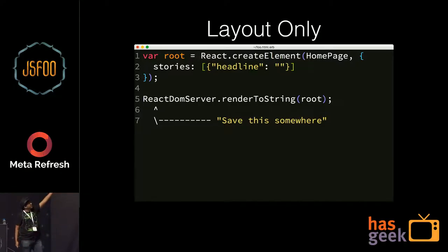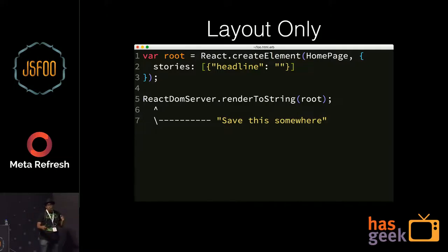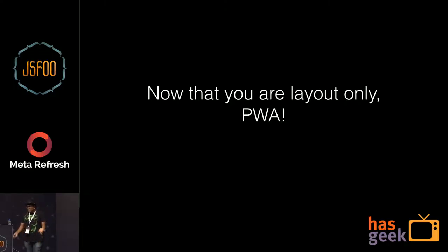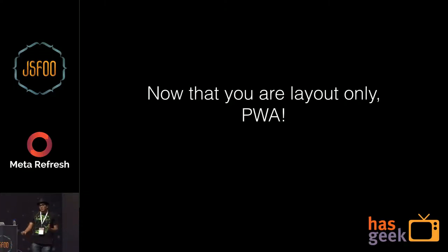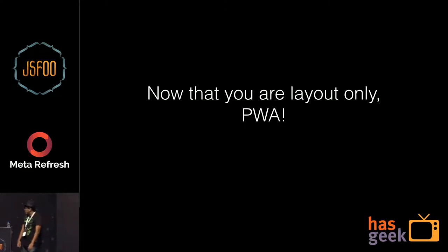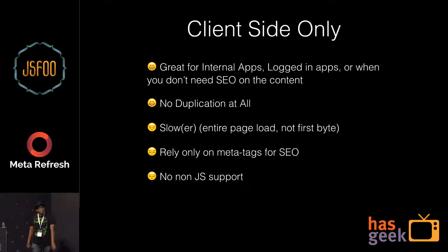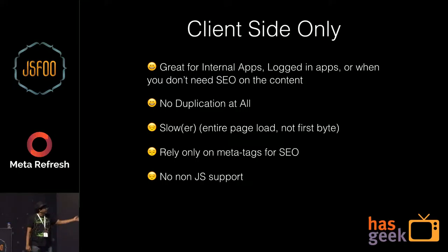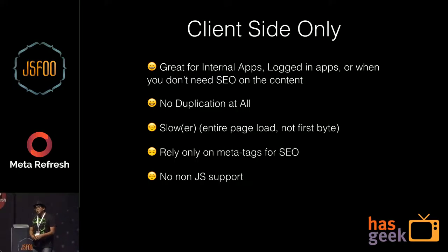This kind of relies on you defining an empty object — for us that was a story with no headline, which we can render without any problem. Now that you have a layout-only render, the next step is a progressive web app, because you can easily cache this and move towards a PWA. The other problem we had was only having meta tags for SEO, so we thought: let's cheat a bit.